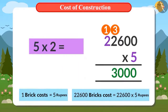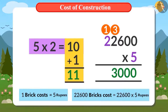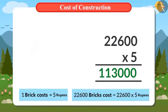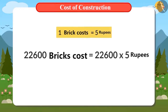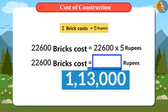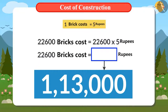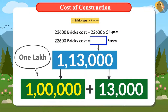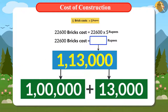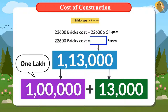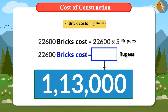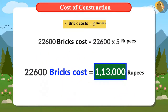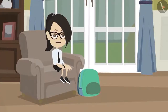We get the answer of multiplying 22,600 by 5. 100,000 is read as 1 lakh, so 1,13,000 is read as 1 lakh 13,000. This means the total cost of 22,600 bricks will be 1 lakh 13,000 rupees.